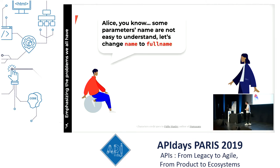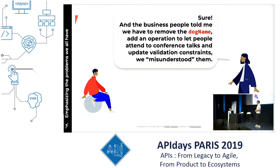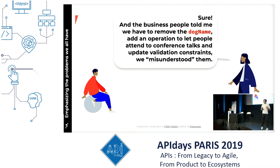They go back to work and after they start implementing the solution, Bob comes back and says, 'Alice, some parameter names are not easy to understand. Let's change name to full name — it's going to be more precise.' And the business people say we have to remove the dog name from the API, add an operation to let people attend conference talks, and update validation constraints because we misunderstood them, which happens very often with clients.